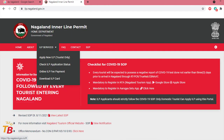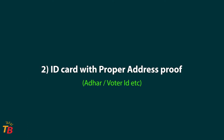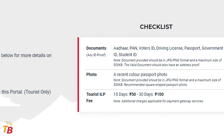Before applying the form, let me clarify what documents are required. Firstly, you have to keep a recent color passport size photo of square size below 500 KB. Secondly, keep your ID proof ready with your proper address proof. Thirdly, you have to provide the place of your stay or any local contacts in your form. Be ready with it because it is very important, otherwise your form will be rejected.